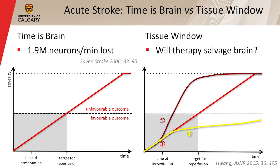It's calculated that 1.9 million neurons are lost for every minute during a stroke. Imaging plays an important role because it's not quite that simple. We need to understand not this idealized linear example, but what's happening in a specific patient. They may start off together but may have completely different trajectories. In fact, patient number three may never actually have an unfavorable outcome. This is really the role of imaging — to decide between these individual patients in the acute setting.